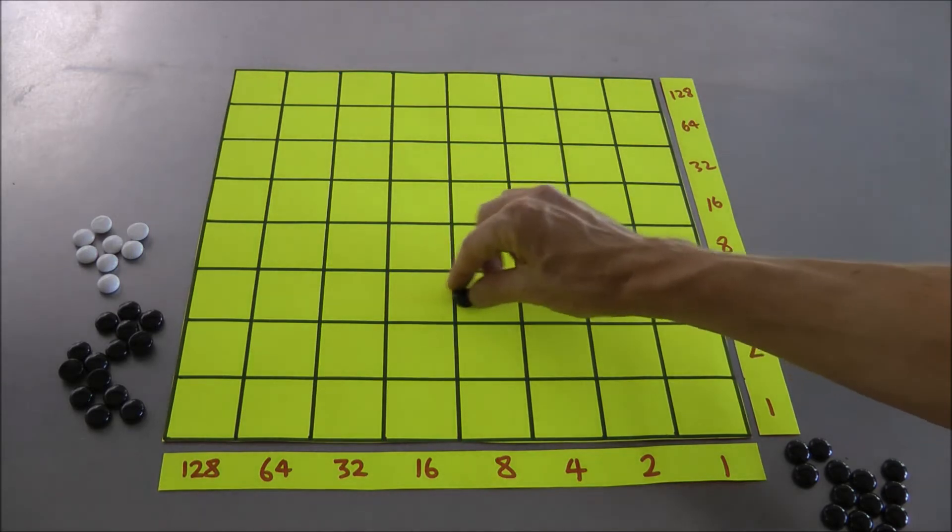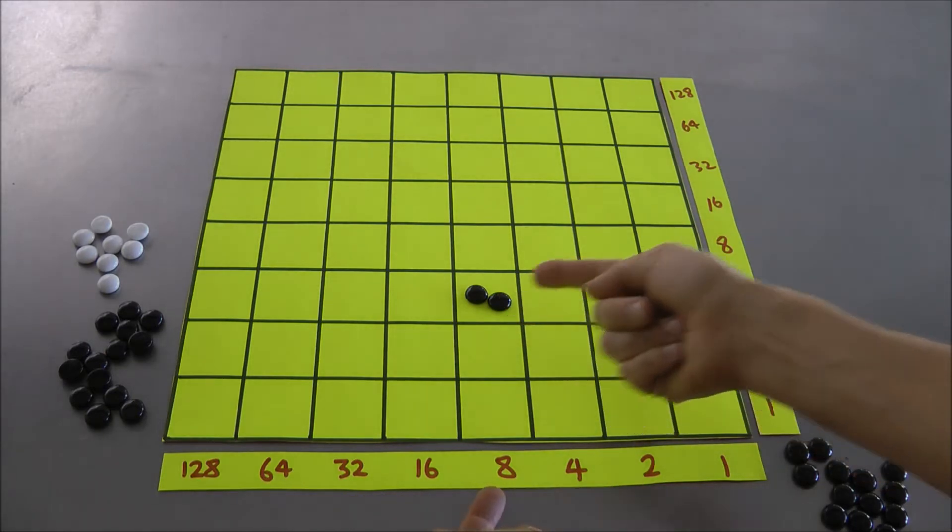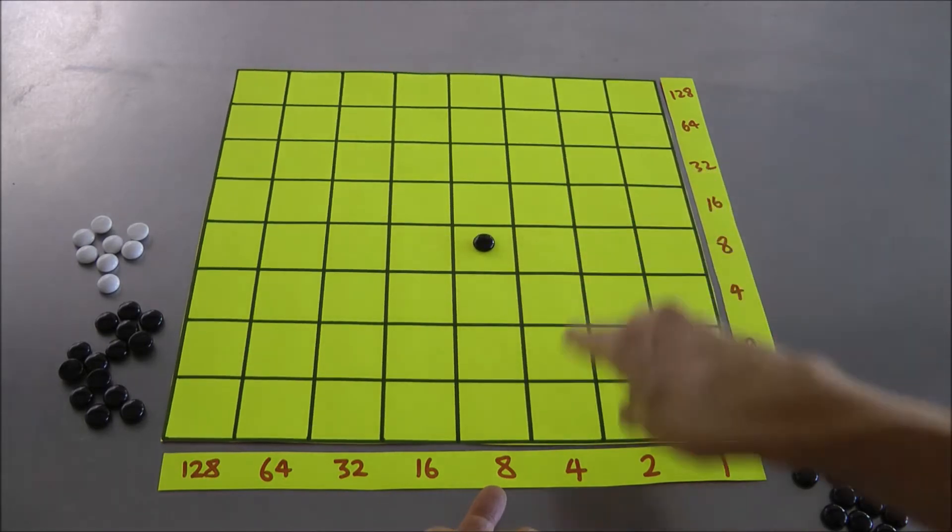But also something better happens as well. So we've also now got 2-1 machines working vertically as well. Because look at this. This is 2 8x4's. Is that the same as, sorry, 1 8x8?